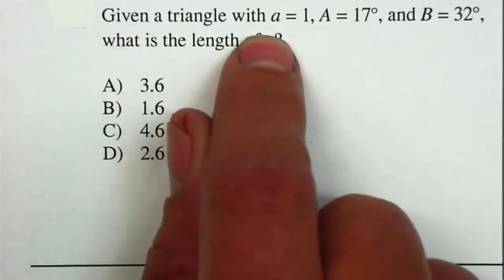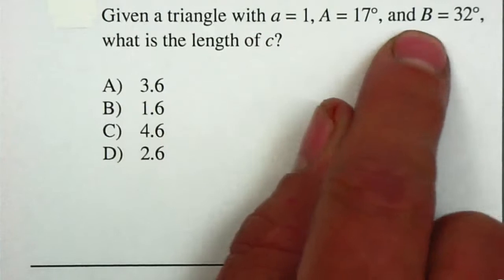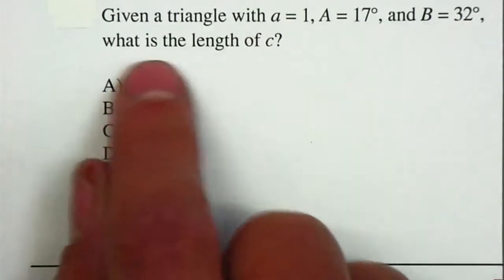Given a triangle with side a equal to 1, angle A is 17 degrees, angle B is 32 degrees, what is the length of c?